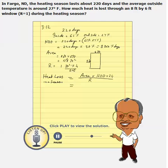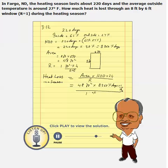So in this case, the area is 48 square feet, and we have 8,360 degree days, times 24 hours per day, divided by an R-value of 1 foot squared degrees Fahrenheit hour over BTU. The units cancel: foot squared with foot squared, degrees Fahrenheit with degrees Fahrenheit, hours with hours, and days with days.